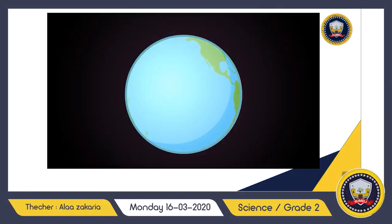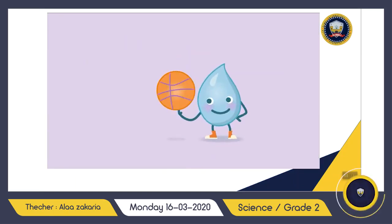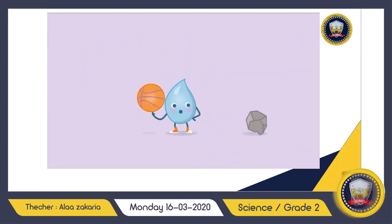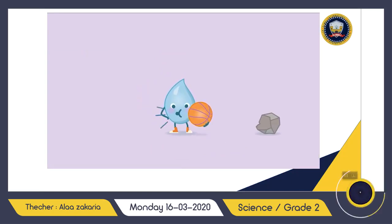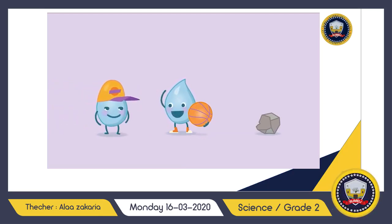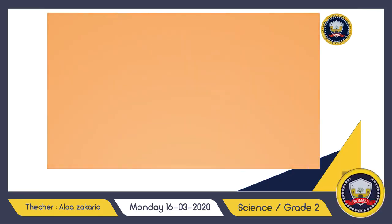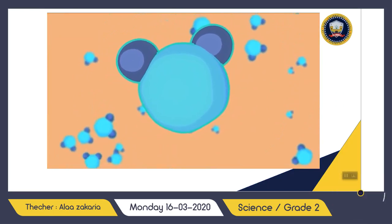On earth, everything is made up of matter. It's everything around us. Heavy rocks are made of matter, and even things we can't see, like air, are made of matter. Even your friends are made of matter. If it takes up space, then it's matter.